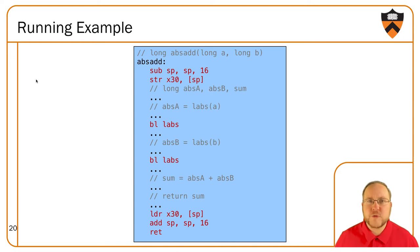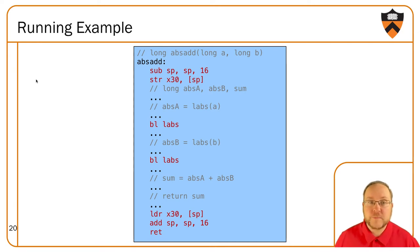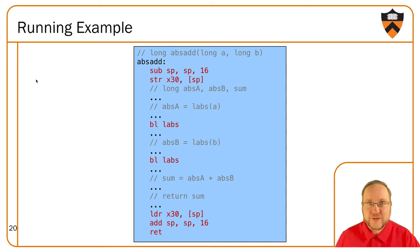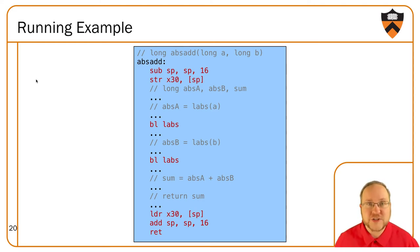Now coming back to our running example with the absolute values. abs_add has a prologue, an epilogue, and then two BL instructions that make function calls to labs, which is just a standard library function. We've cut out some pieces that were previously just pseudocode. Now we can say we've set up the stack frame, we tear down the stack frame, and in between we make two function calls.